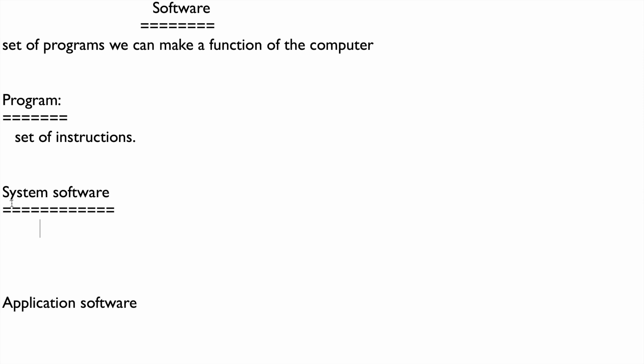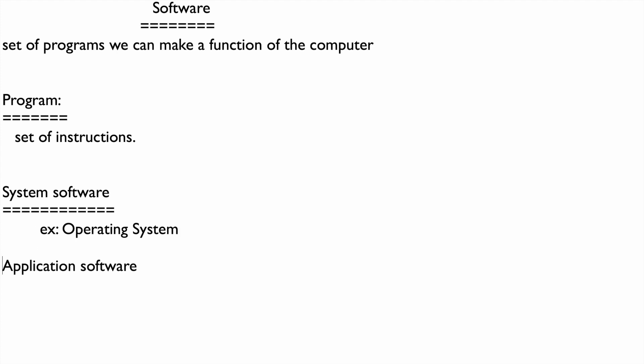If we want to run our system, we must use system software. An example of system software is the operating system. The second type is application software, which is used only for a specific purpose.